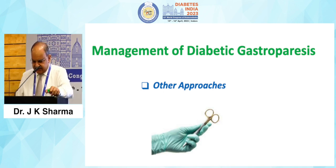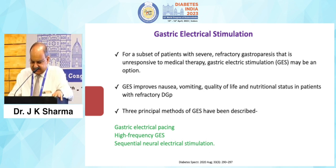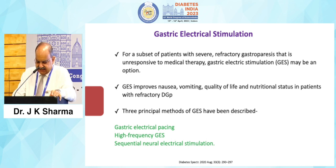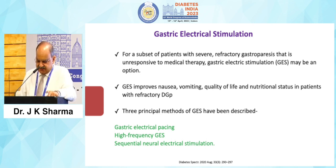There are other approaches for management. Gastric electrical stimulation (GES) is available for a subset of patients with severe refractory gastroparesis unresponsive to medical therapy. GES improves nausea, vomiting, quality of life, and nutritional status in patients with refractory diabetic gastroparesis. Three principal methods have been described: gastric electrical pacing, high-frequency gastric electrical stimulation, and sequential neural electrical stimulation. Practically, how many gastroenterologists or neurologists are performing this is uncertain, as this is a specialized area.